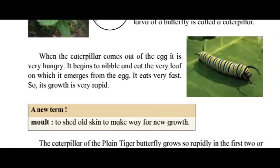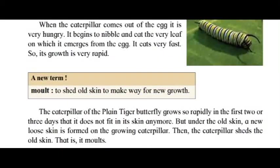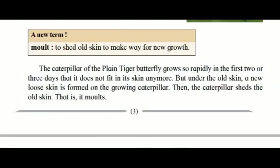When the caterpillar comes out of the egg, it is very hungry. It begins to nibble and eat the very leaf on which it emerges from the egg. It eats very fast, so its growth is very rapid. New term: molt — to shed old skin to make way for new growth.